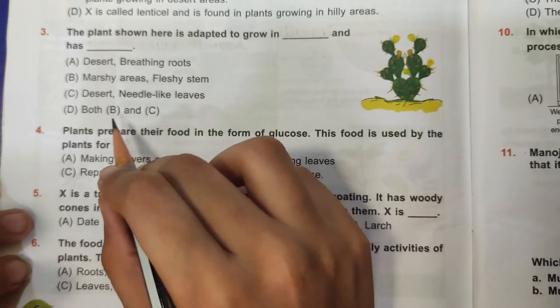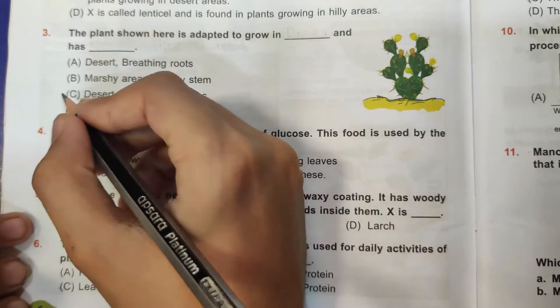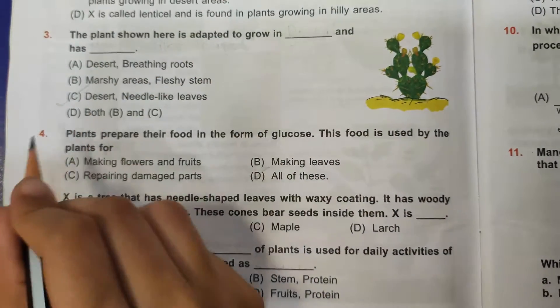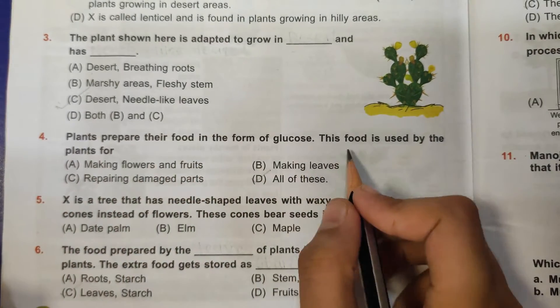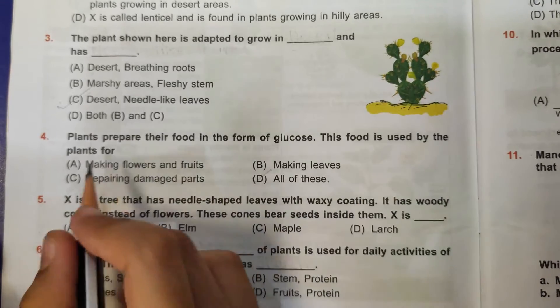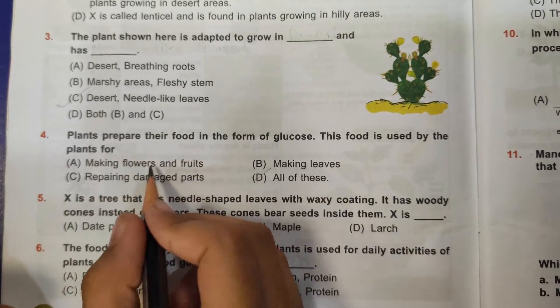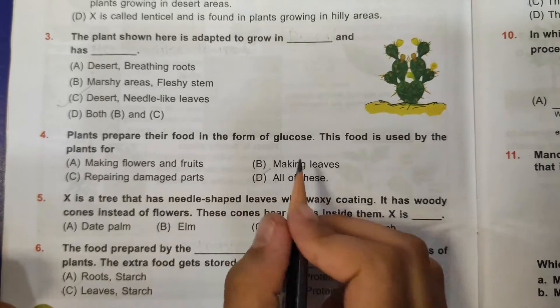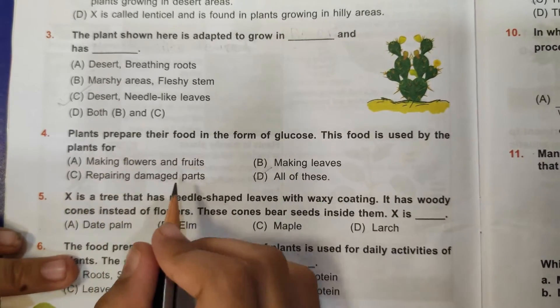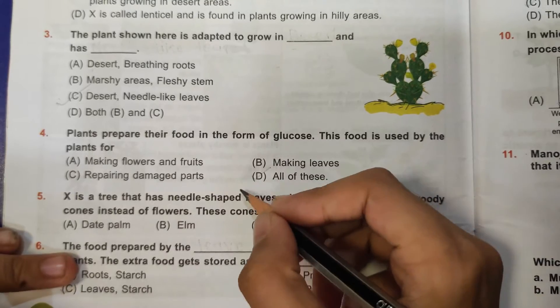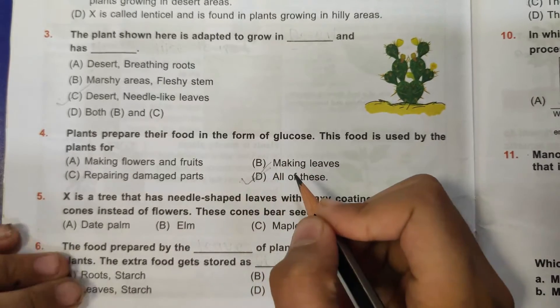Fourth question: plants prepare their food in the form of glucose. This food is used by the plant for making flowers and fruits - yes that's true, making leaves - yes that's also true, repairing damaged parts - that's also true. So D, all of these, is the correct answer.